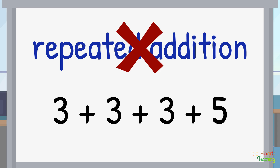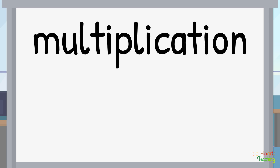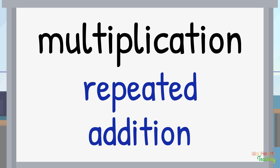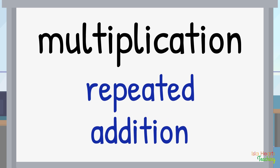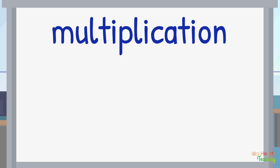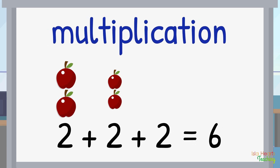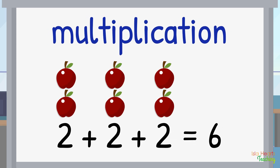See how there are three groups of 3, but then there is one group of 5. So, since multiplication is repeated addition, this means that multiplication is adding a series of equal groups over and over to make a total.